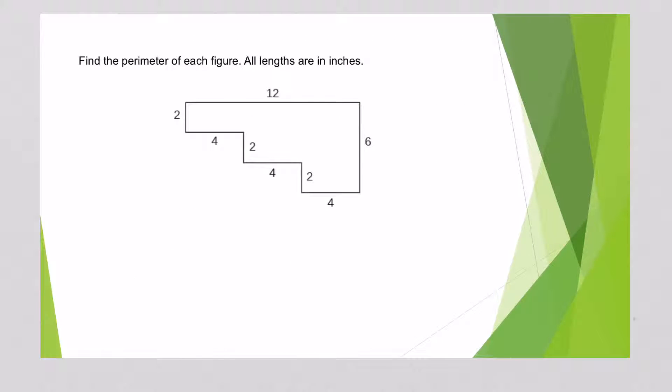This problem, again we're finding the perimeter so we're going to add up all the sides. The longest side is 12 and then this side is 6, 4, 2, 4, 2, 4, and the last one is 2.